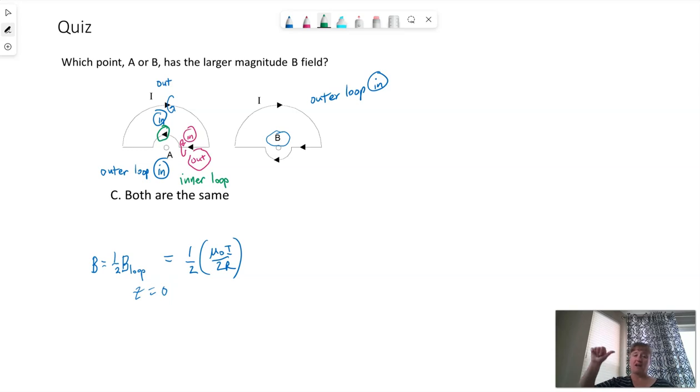In point A, I see on my screen that that arrow points to my left. So I'm pointing my thumb of my right hand. So my right hand thumb in front of my face here is pointing to the left to match that arrow. So above my thumb, my fingertips are pointing away from me. Below my thumb, my fingertips will be pointing towards me. So what that means is into the screen above the wire and out of the screen below the wire. Point A is below the wire. And so that means at point A, the magnetic field is coming out of the screen.